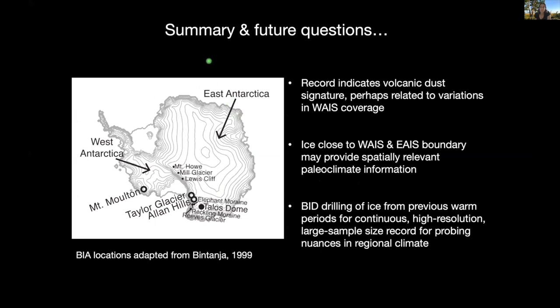To summarize the Taylor Glacier record: it indicates a volcanic dust signature during the last interglacial period, which could be related to variations in West Antarctic ice sheet coverage. I think ice located close to the boundary between the West and East Antarctic ice sheets could provide spatially relevant paleoclimate information not captured by traditional ice cores drilled from the East Antarctic plateau. In the future, using the blue ice drill to get large-volume samples from previous warm periods could yield high-resolution records with really interesting information about regional nuances in climate and surface conditions.